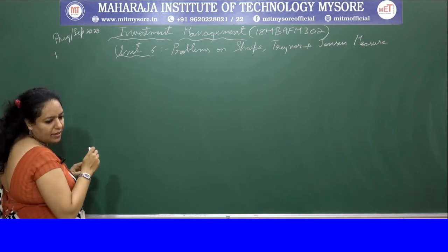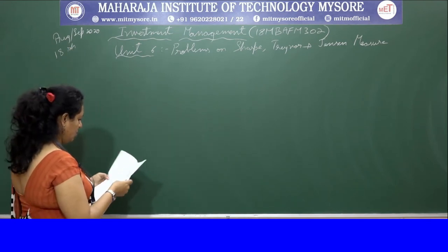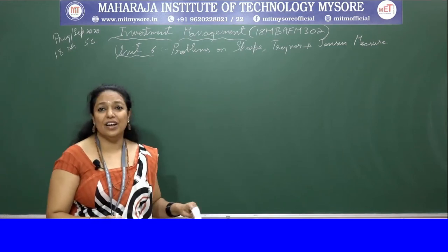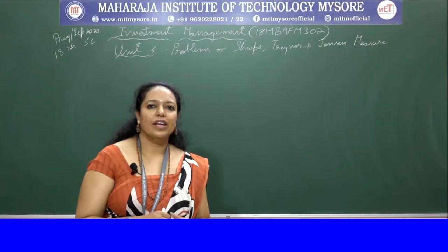This is the 18-scheme, question 5C. The question states: the following three portfolios provide the particulars given below. Portfolios A, B, C, and market are given. Annual average return is 18, 14, 15, and 13 respectively. Standard deviation is 27, 18, 8, and 12. Correlation coefficient is 0.8, 0.6, and 0.9. Market return is 13, standard deviation is 12, risk-free rate is 9. They ask us to rank portfolios using Sharpe's and Traynor's measure.